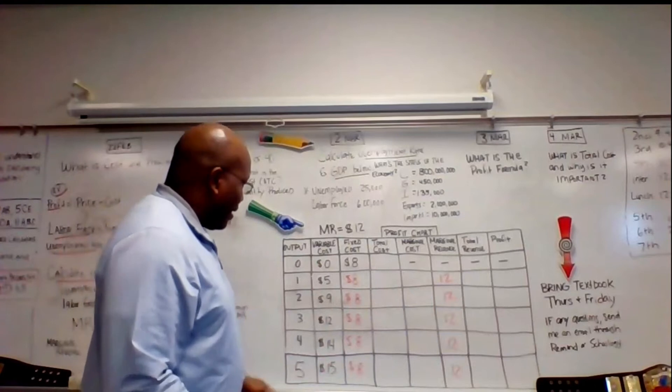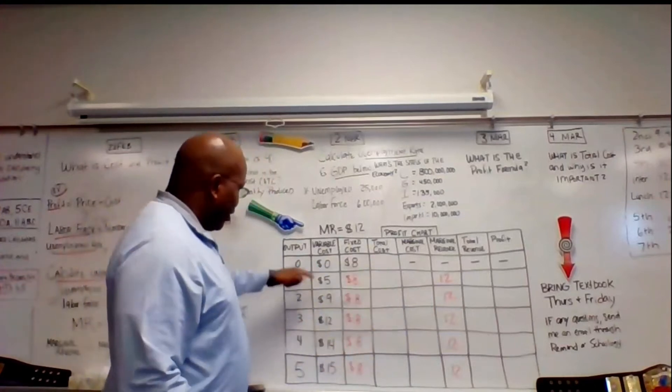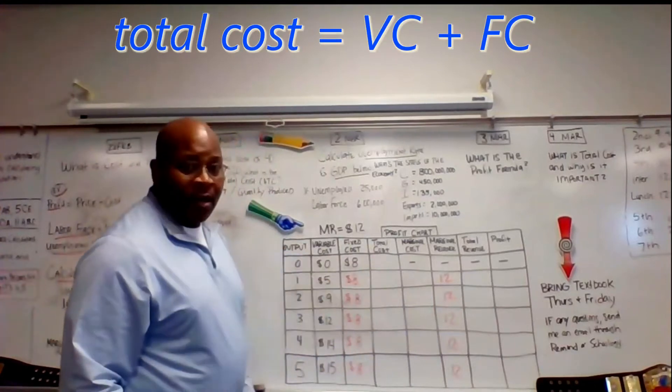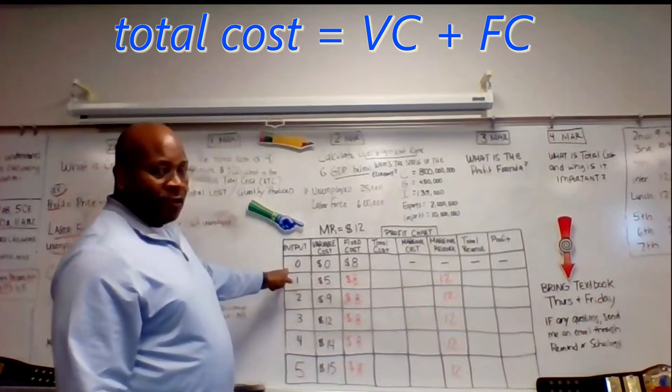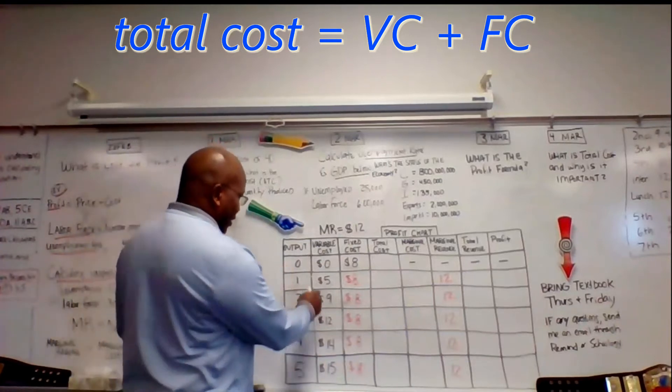Total cost would be your variable cost plus your fixed costs. And notice, even with zero output, I do have fixed costs. So we add those up.